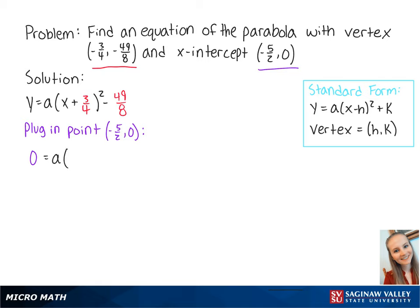So we get 0 equals a times (-5/2 + 3/4) squared minus 49/8. This gets us a equals 2.